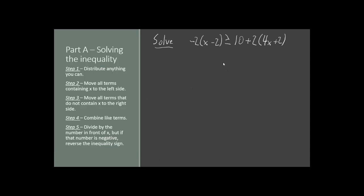Let's get started. In this problem, we have negative 2 times x minus 2 is greater than or equal to 10 plus 2 times the quantity 4x plus 2. It looks like a big mess to begin with, so the first step I recommend is to try to distribute anything that you can distribute.